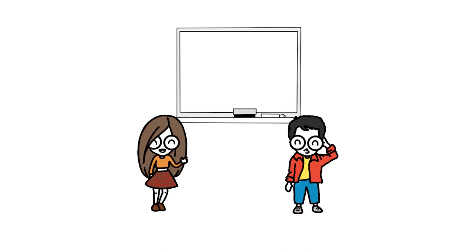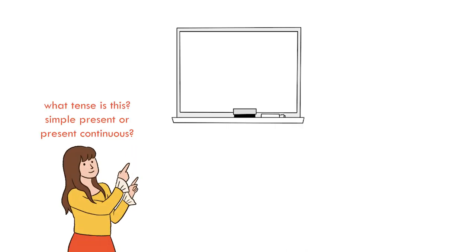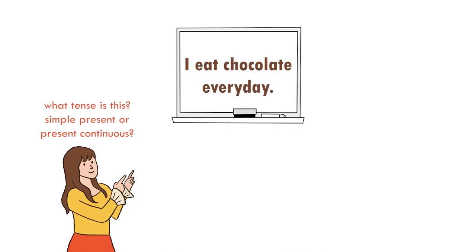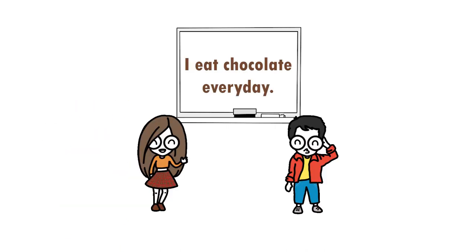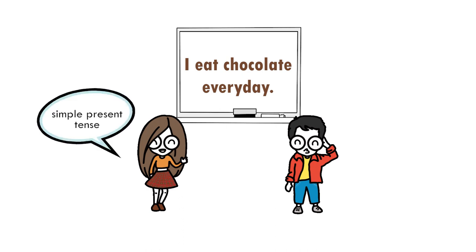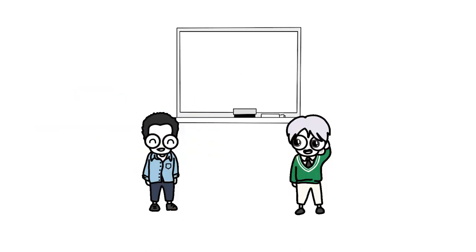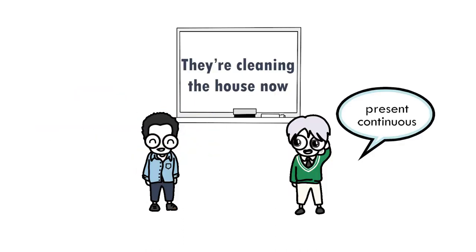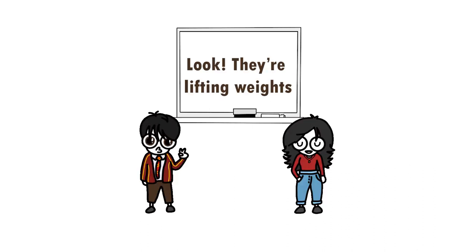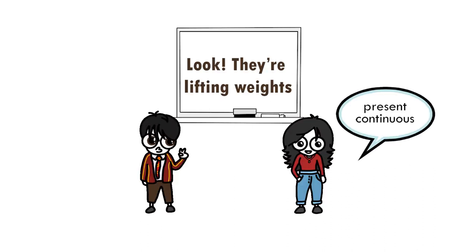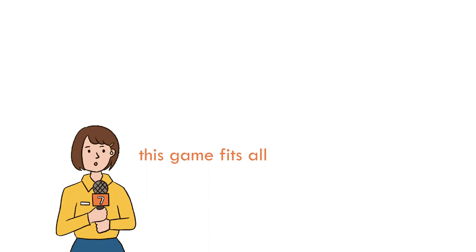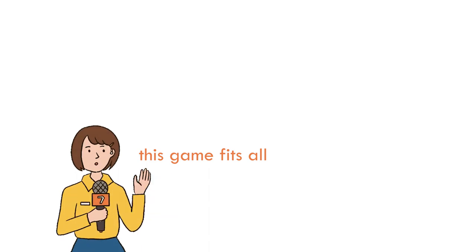Pick two students to play against each other. Tell the students to shout the name of the right tense, and the student who says it first gets a point. Students here have to mainly focus on two things: the forms of the verbs and if there are any keywords. You can play the same game to revise different grammar tenses.